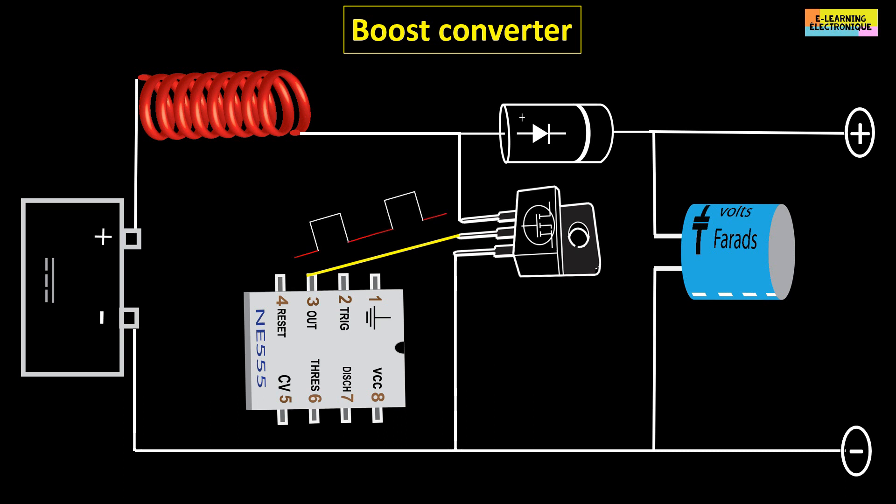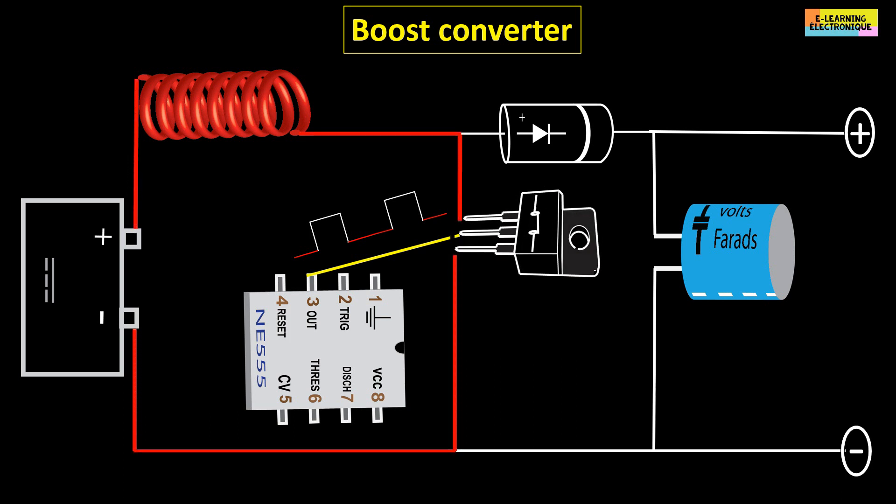The coil has the characteristic of opposing the current variation and has the ability to store magnetic energy. When the MOSFET is in closing mode, energy is stored in the coil. At the same time, the voltage remains constant in the load thanks to the capacitor.